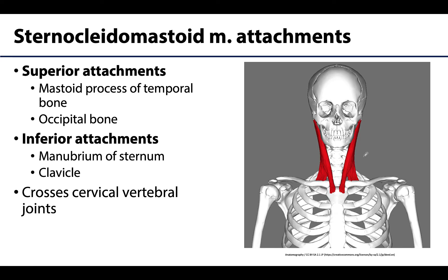Starting with the sternocleidomastoid muscle, which we sometimes abbreviate as SCM. The sternocleidomastoid muscle is a very prominent landmark in the neck, one that you can actually see pretty well through the skin, and one you can definitely palpate on yourself. Try to palpate the sternocleidomastoids on yourself — you'll find them pretty easy to locate, particularly if you kind of twist your face to the side.